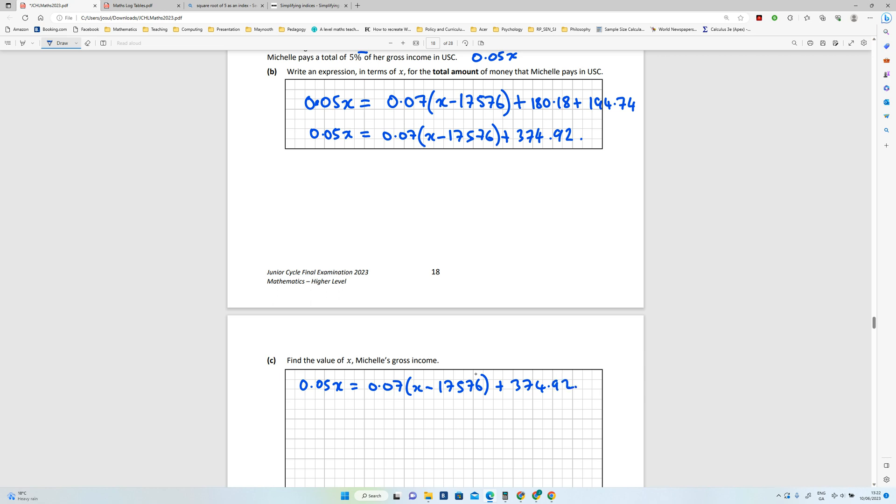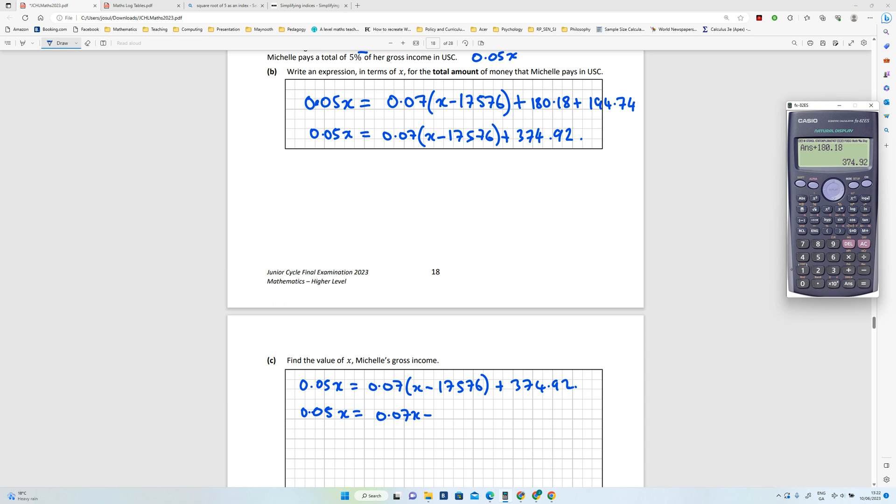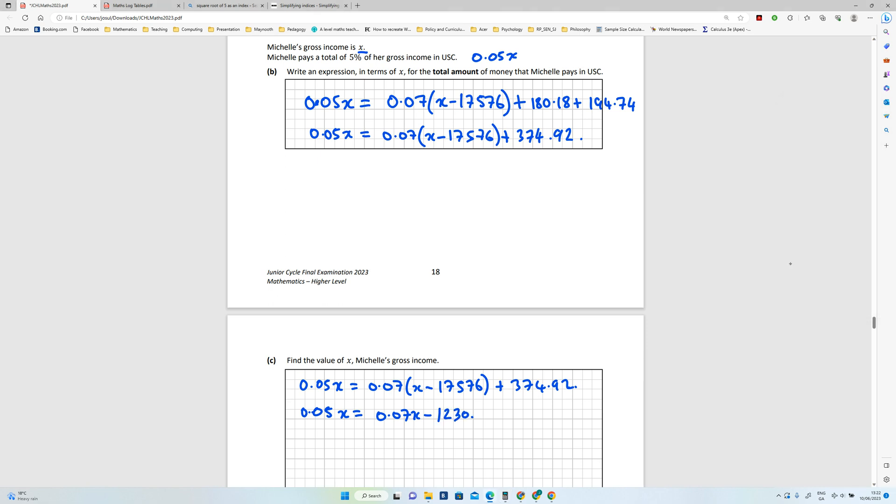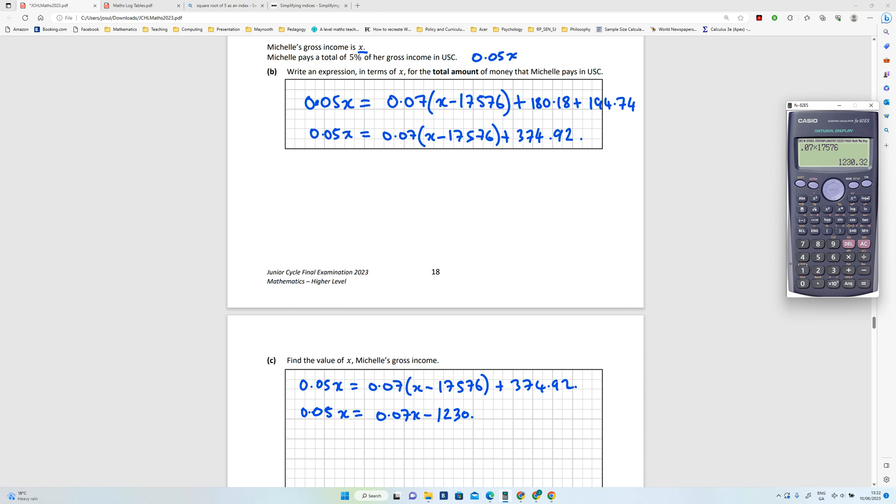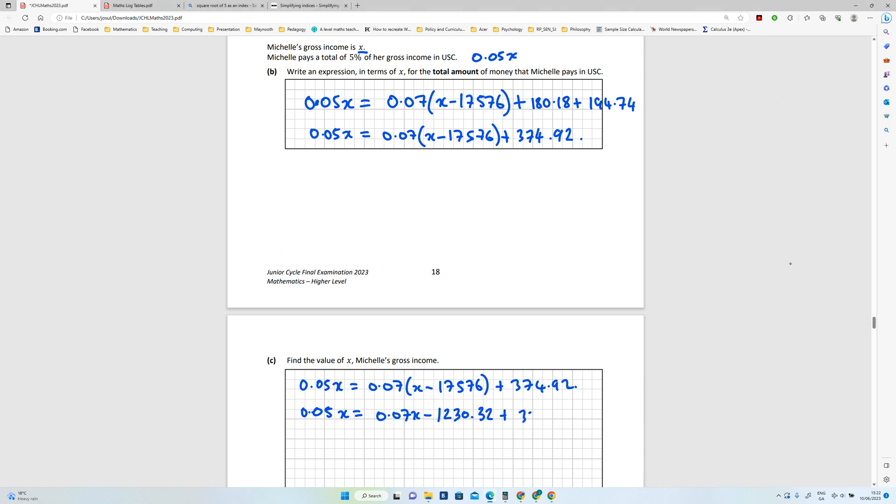Okay, so the next thing we'll do is we will multiply 0.07 by both of these. So that's going to be 0.07X minus, let's do this one on the calculator, 0.07 multiplied by 17,576, and that should be okay. So that's 1,230.32 plus 374.92.